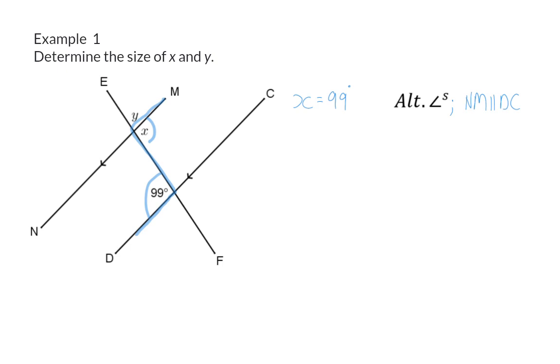With angle X being 99 degrees we can make use of angles on a straight line to determine the size of Y. So Y will be 180 degrees minus the 99 degrees of X because angles on a straight line add up to 180. This means that Y is 81 degrees.